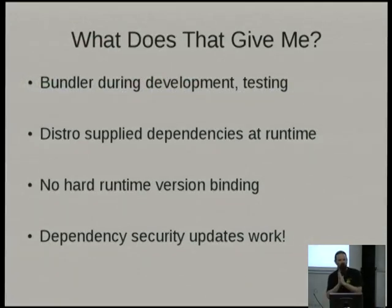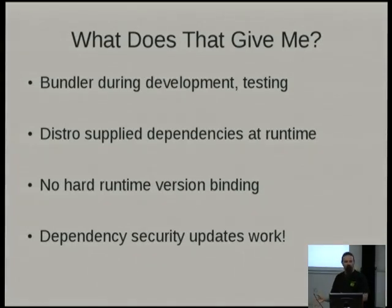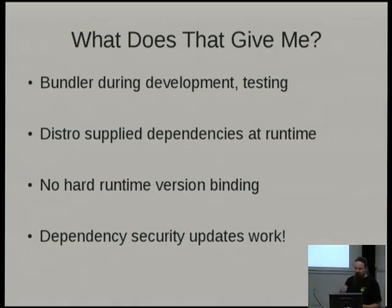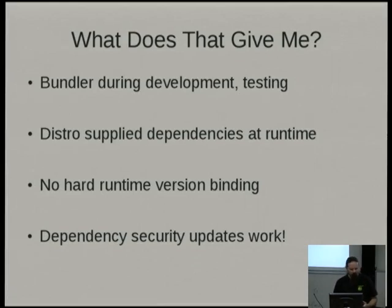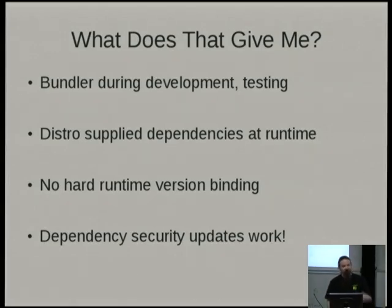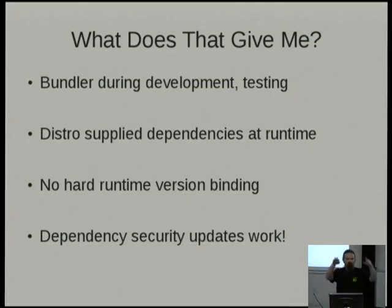So what does this give me? I'm using Bundler exactly when I want to — during development and testing. I'm using distro-supplied dependencies at runtime. I have no hard runtime version binding at all. Dependency security updates work because that hard binding has gone away — we can ship a new Rails package and the application will just use it. I've deliberately kept a very conservative, short list of dependencies, partly because the more dependencies I have, the more stuff we have to support. We have to be judicious about what packages we include in the distro since we have to stand behind them. This approach may become more annoying to maintain for larger applications with more complicated dependency sets, but it will still work.